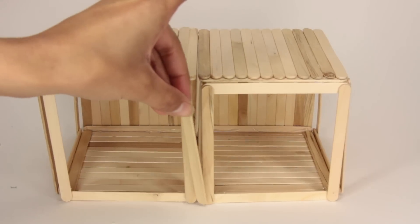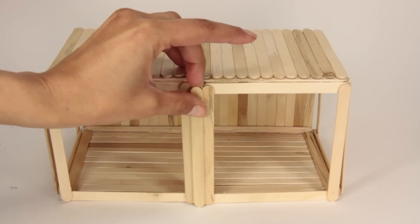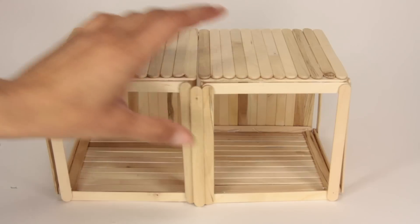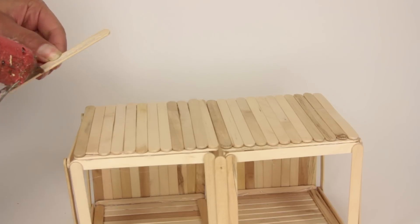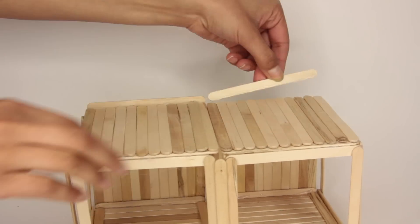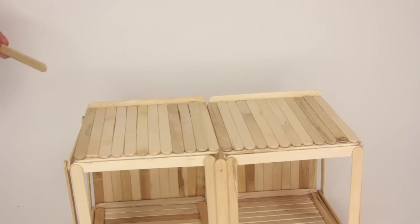Anyways, when you are putting everything together, you might have some gaps you don't like. So I just use extra popsicle sticks to cover up the gaps. Once you've got the base done, you can start adding the other squares to make up the other two cubes.